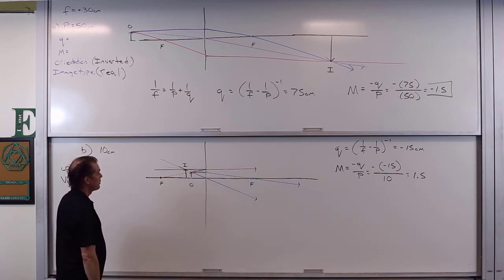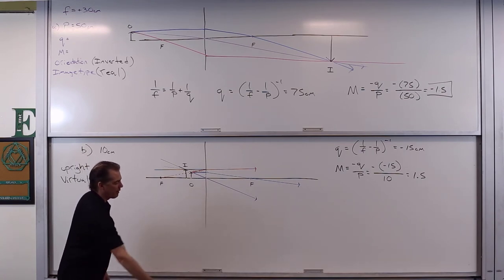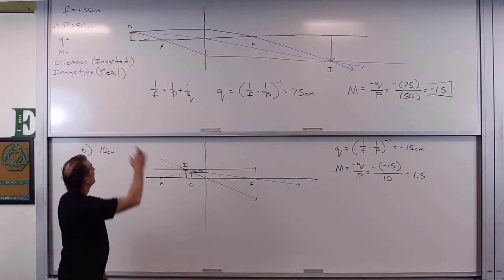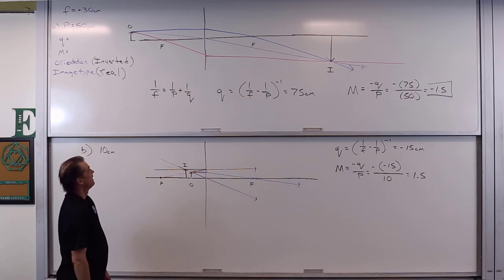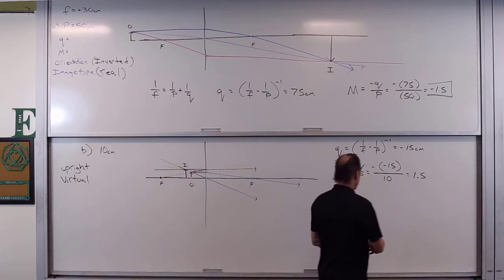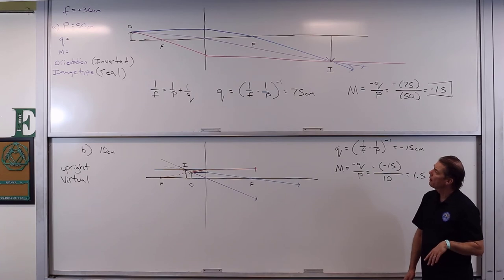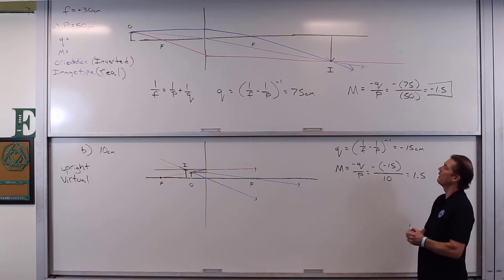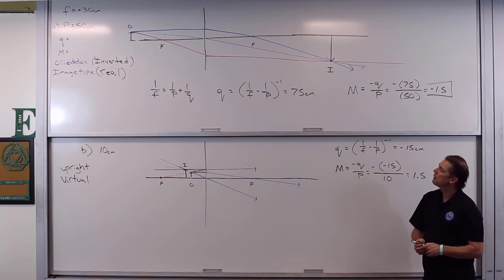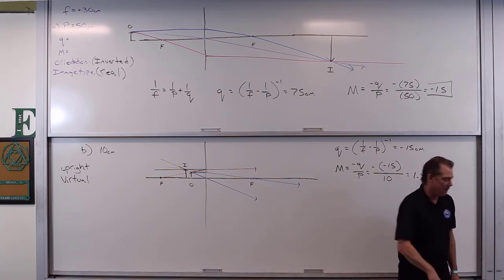That goes to show you: use a ruler and ray diagrams come out nicer than free-handing them. But when you have long lengths, using a ruler is sometimes more trouble than it's worth on the board quickly. Anyway, that's a nice little problem. We'll come back and look at another problem involving a convex lens — stay tuned, take care.